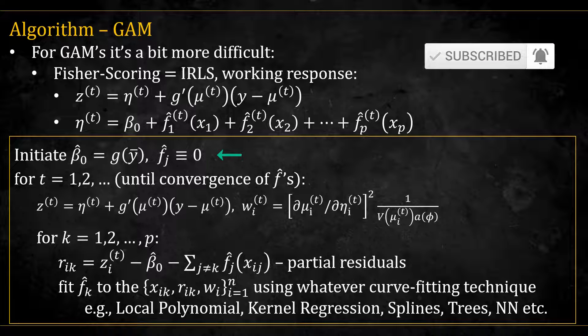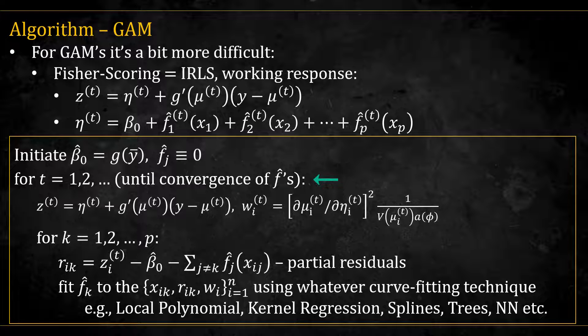So we modify the backfitting algorithm as follows. We initialize beta 0 to be the mean of the link function. We iterate in the outer loop until the convergence of the functions, or the coefficients. In each iteration, we use the last estimates to calculate the linear predictor and the weights, just like in standard GLMs. Then we do backfitting on the partial residuals of the z's, with the weights. Again,